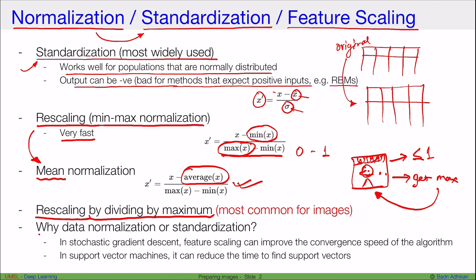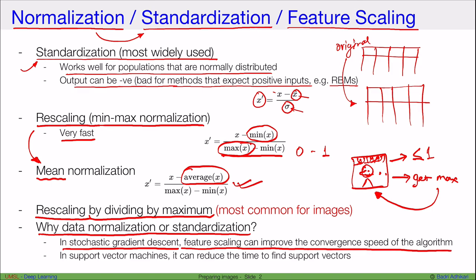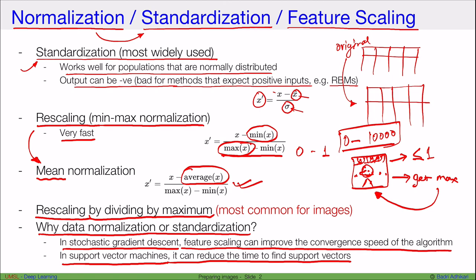A common question is: why do we do data normalization or standardization? In stochastic gradient descent used in back propagation, feature scaling can improve the convergence speed of the algorithm. Similarly in support vector machines it can reduce the time to find support vectors. Basically, if your input values range from 0 to 10,000 the neurons have to jump around from very tiny to very large numbers, but if all numbers are between 0 and 1 it is easier for the neurons to learn from the input data.